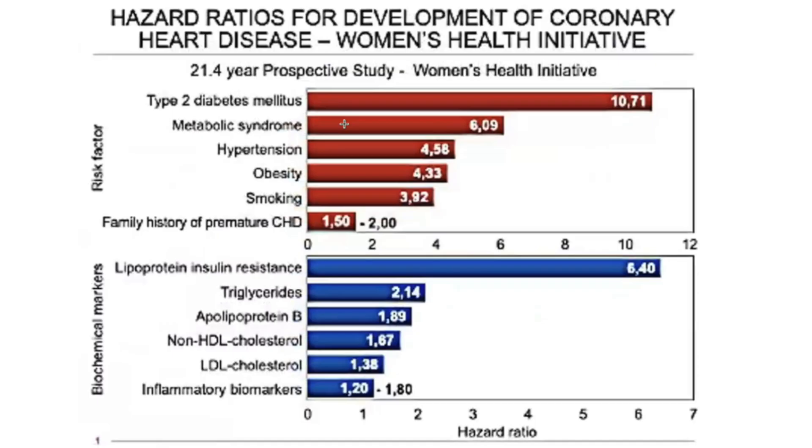Now, what's so important about this graph is to look at the relative differences between the different risks. And if we look at the top graph, let's just take a look at type 2 diabetes. If you have diabetes, you're at more of a 10 times risk of developing heart disease than people that don't have diabetes.